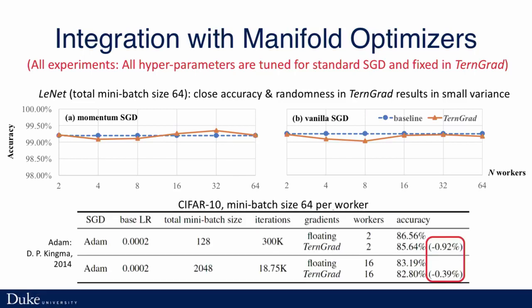We also did experiments on CIFAR-10 using Adam. The average loss is controlled within 1%. Since if we also tune hyperparameters specifically for TernGrad, we should be able to reduce the accuracy difference.